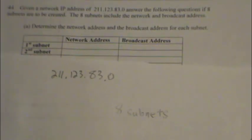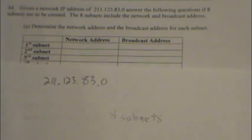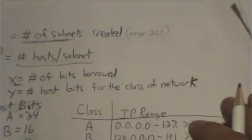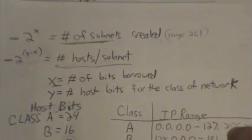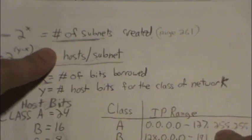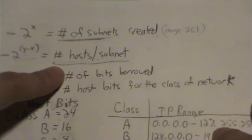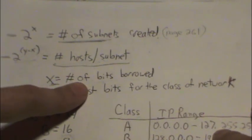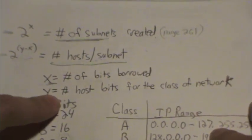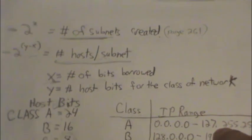We are going to need our equations that we had last time, where 2 to the x equals the number of subnets created, 2 to the y minus x equals the number of hosts per subnet, where x equals the number of bits borrowed, and y equals the number of host bits for the class of the network.